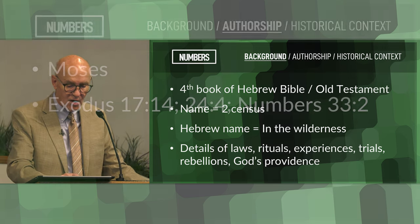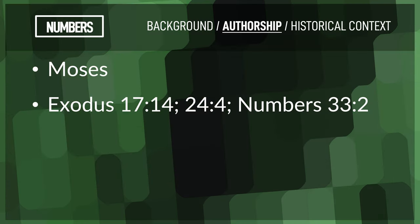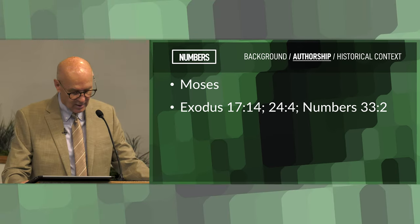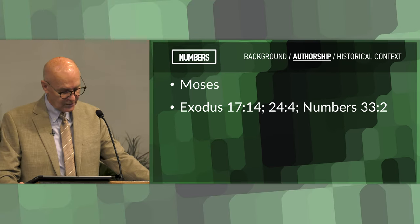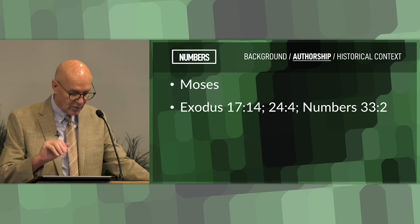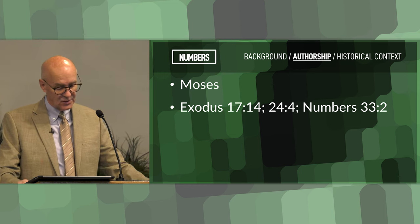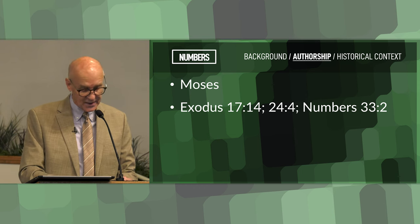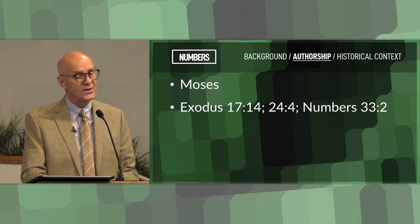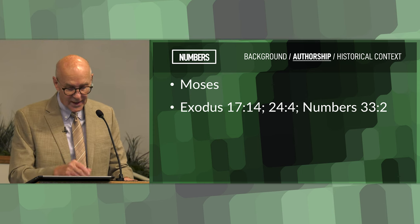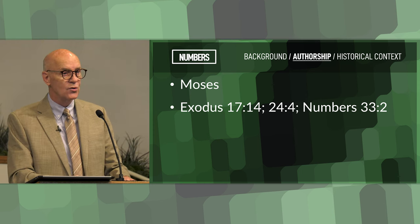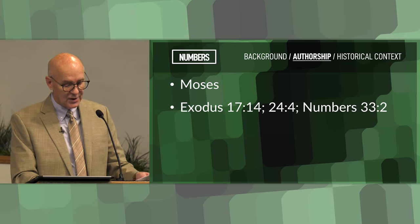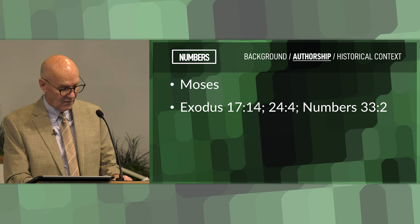As far as authorship is concerned, both Jewish and Christian scholars attribute the authorship of Numbers to Moses. This is based on passages within the Pentateuch — referring to the first five books of the Bible — that suggest Moses wrote down the laws and events described. You can read about that in Exodus 17:14, Exodus 24:4, and Numbers 33:2. That is internal evidence for the Mosaic authorship.